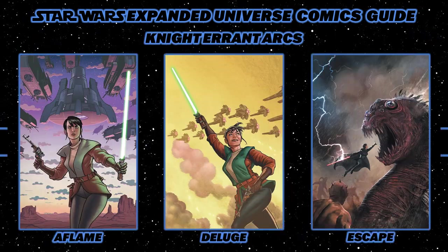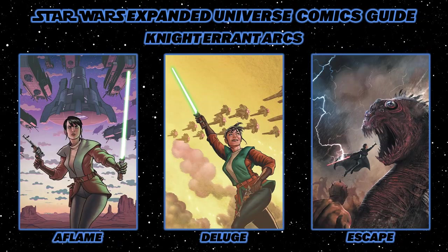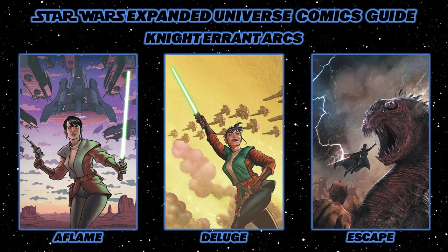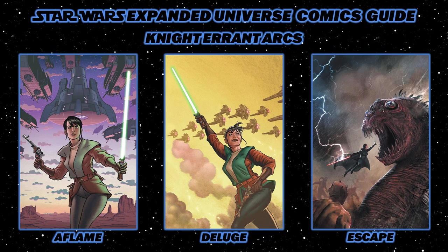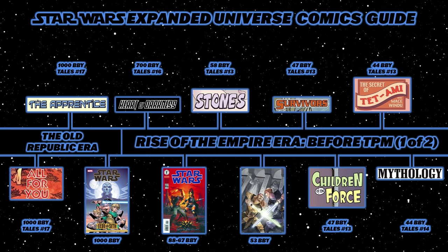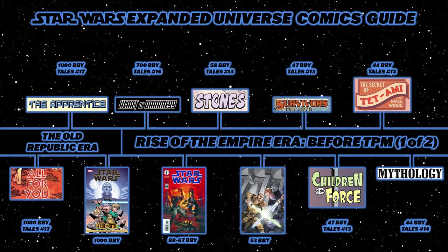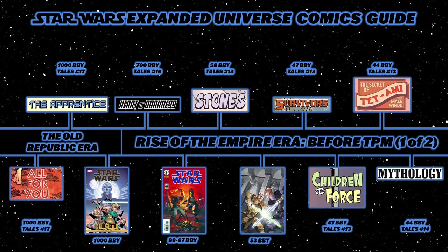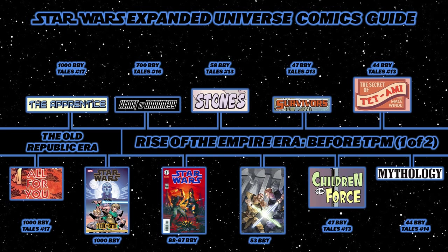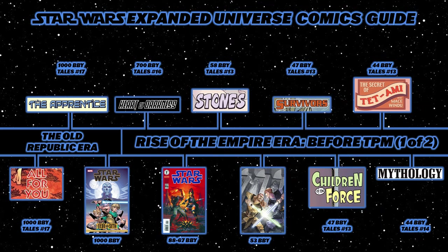After that, read the Knight Errant series, made up of three comic book arcs. First, Knight Errant: Aflame, narrated through Jedi Knight Kerra Holt's point of view. The second arc is Deluge, and the final arc is Escape. After that, read All for You and The Apprentice — both stories from Star Wars Tales number 17.